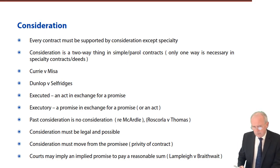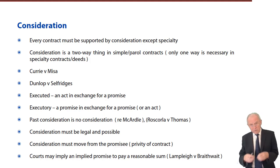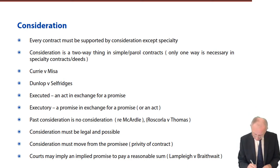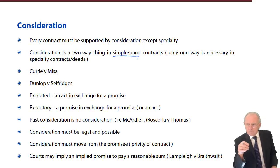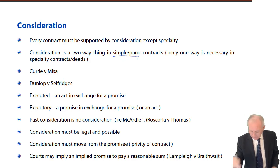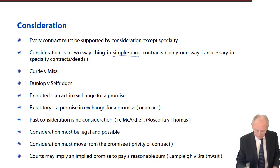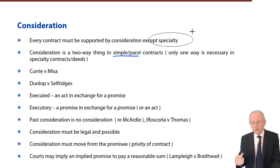Consideration is a fundamental necessity for simple or parol contracts. A simple contract is distinct from a specialty contract. A specialty contract is one made under seal — a deed. For instance, if I promise to give you 300 euros and expect nothing in return, and then I don't pay, you cannot successfully sue me because you gave me nothing in exchange for my promise.